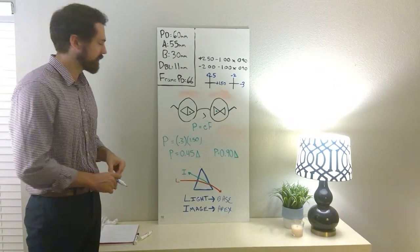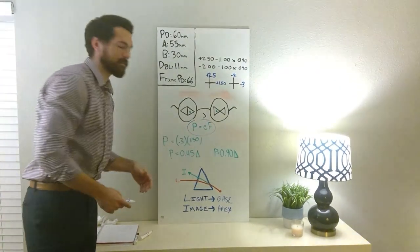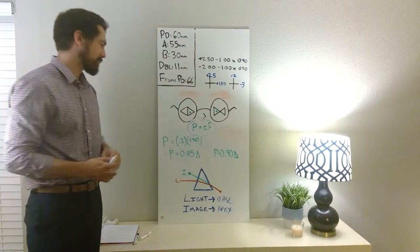So let's go ahead and solve. Now what's the name of this rule we use for induced prism, the name of this formula? Prentice's rule. Very good.